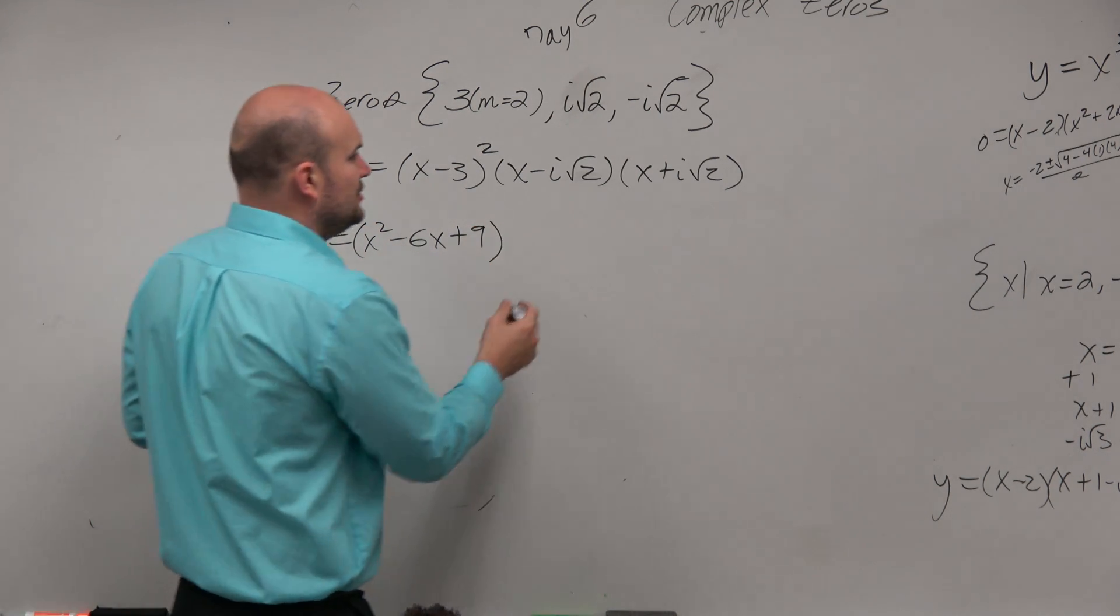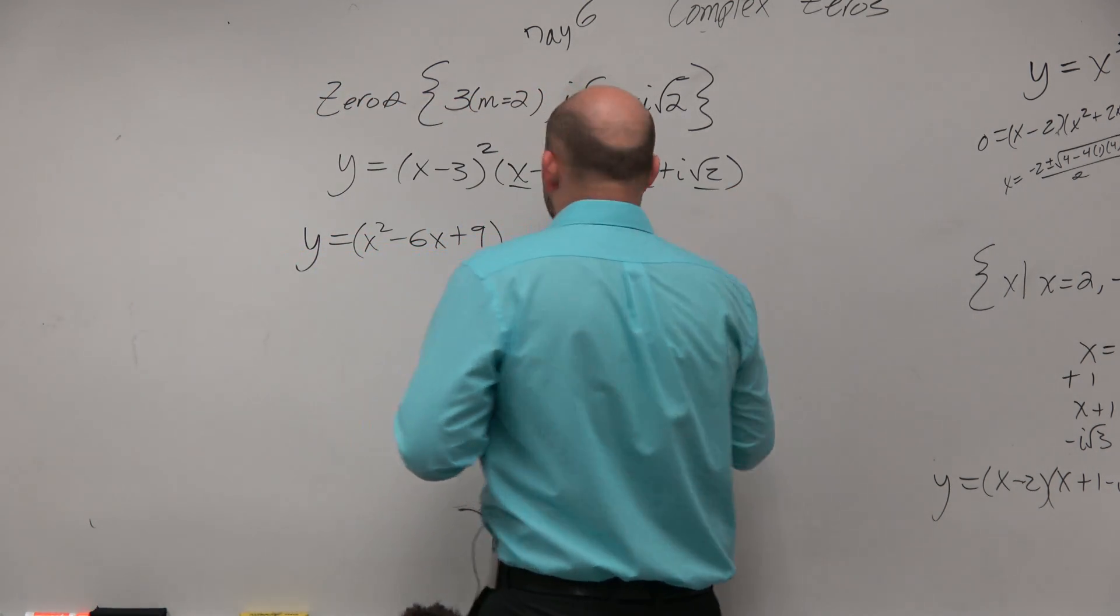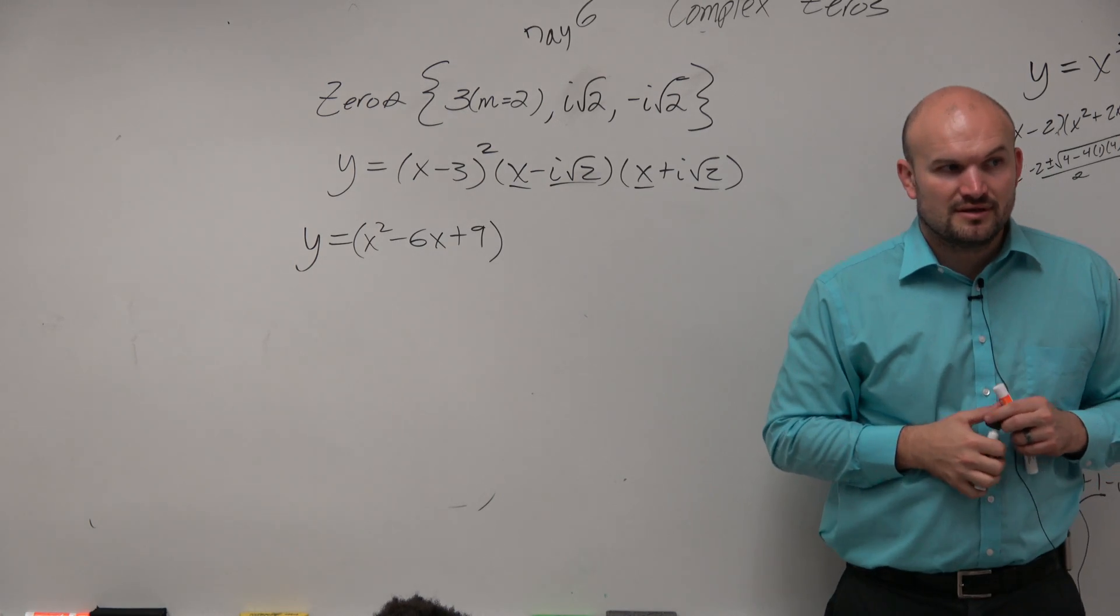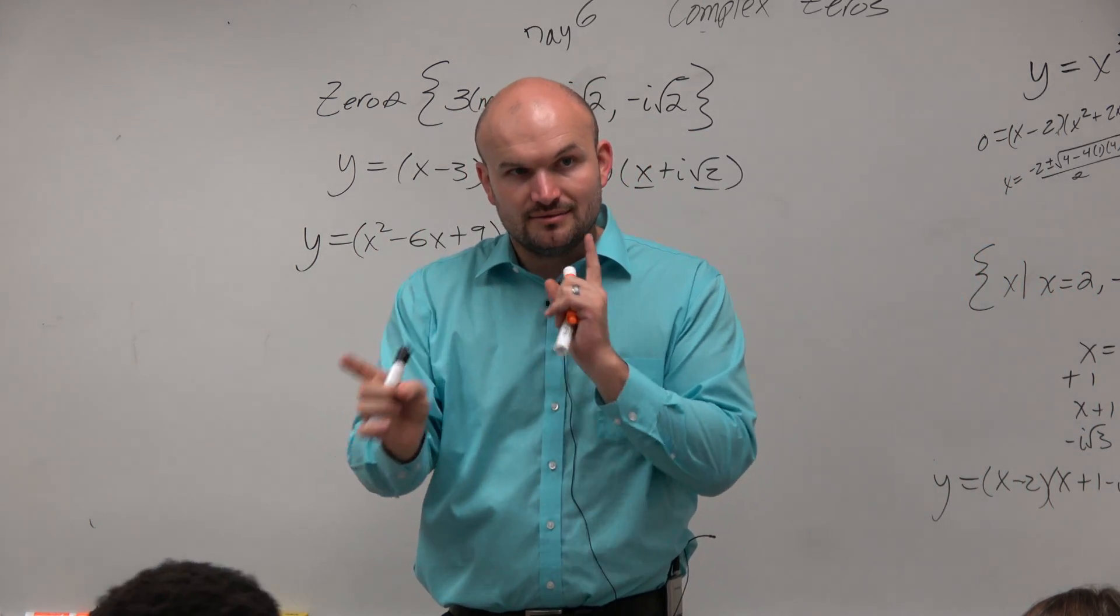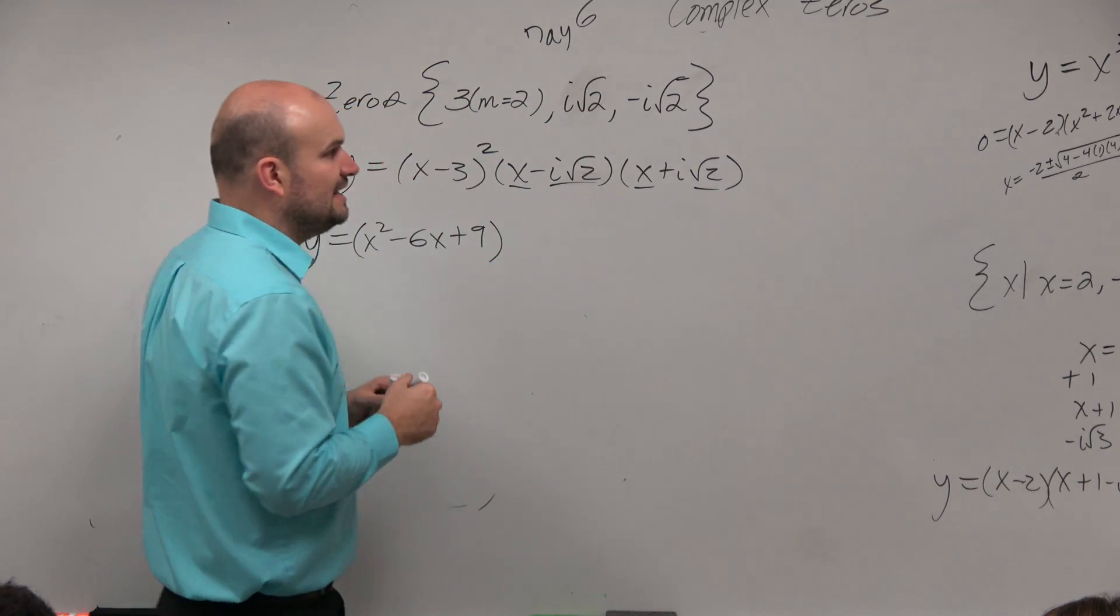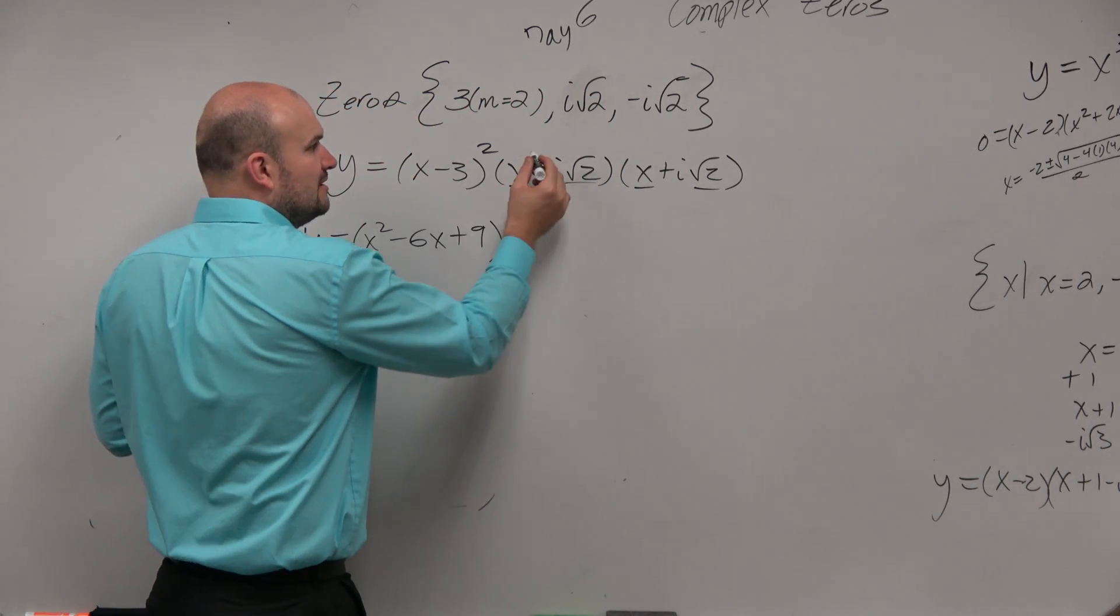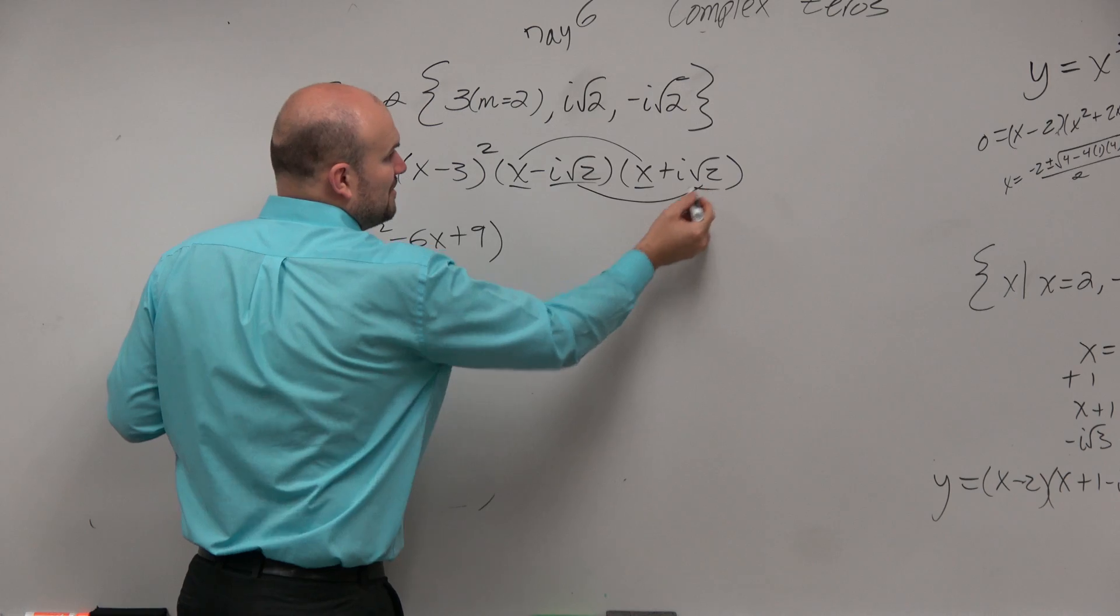Then, here, notice guys, this is a difference of two squares. First terms are the same. Last terms are the same. Alternating signs. So I don't need to multiply everything times everything. I just need to multiply my first two terms, multiply my last two terms.